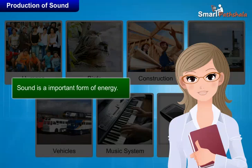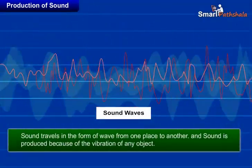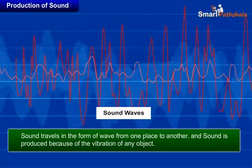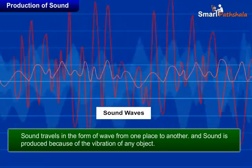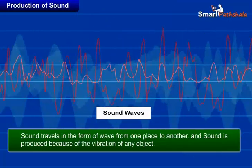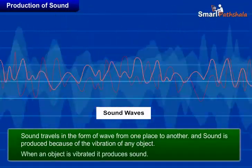But have you ever thought about how sound is produced? Let's discuss in this module how sound is produced. Sound travels in the form of a wave from one place to another, and sound is produced because of the vibration of any object. In other words, we can say that when an object vibrates, it produces sound.